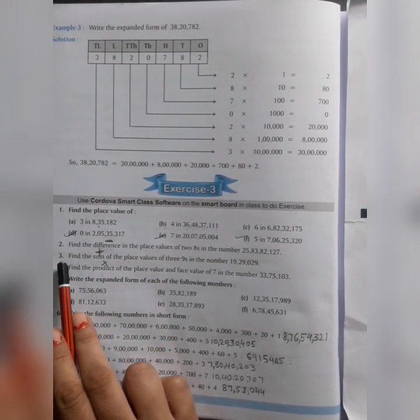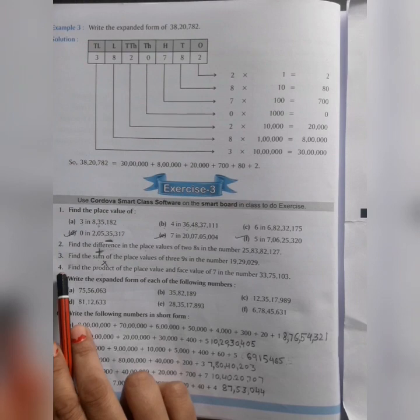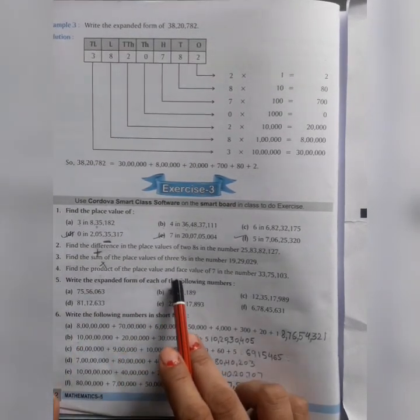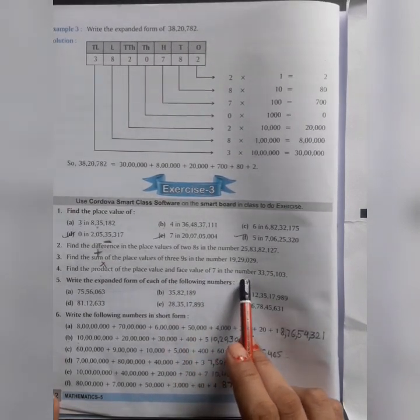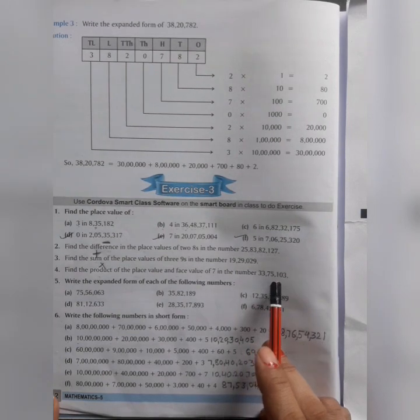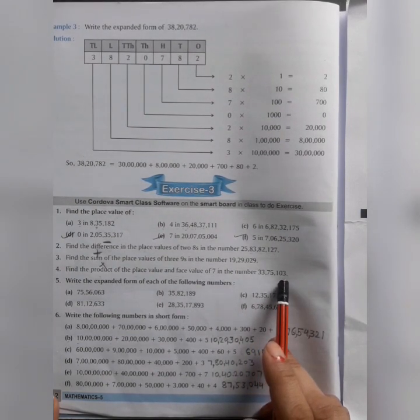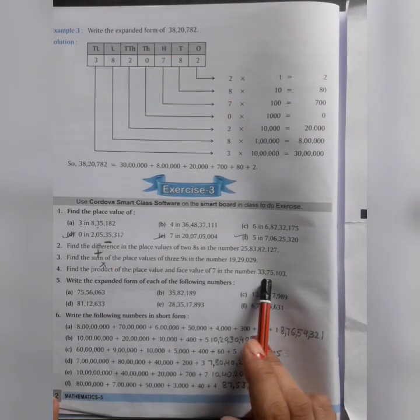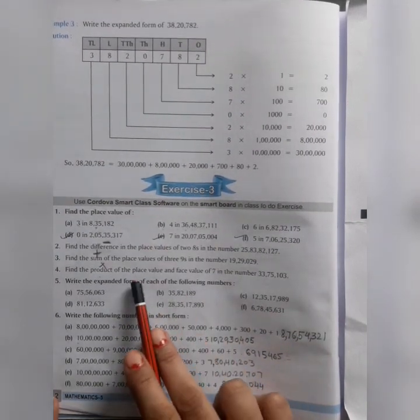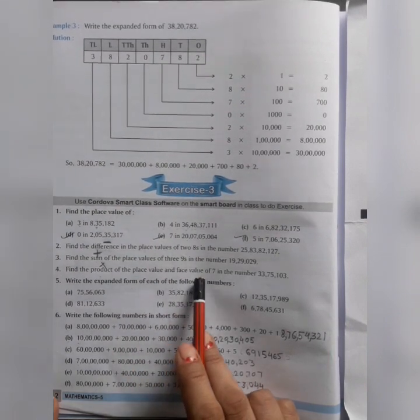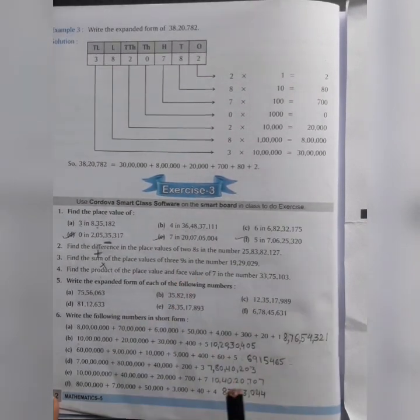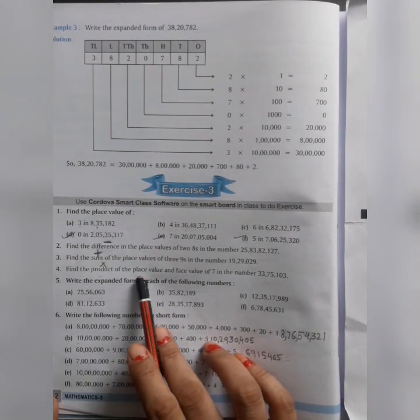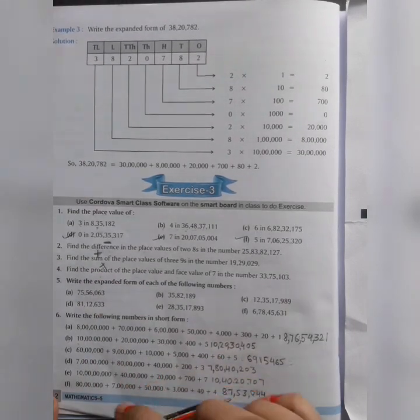Last class we covered questions 1-3. Today we will do Question number 4: Find the product of the place value and face value of 7 in the number 33,75,103. You have the number given here. In that you have 7, and you have to find both things. What are the things? Place value and face value.